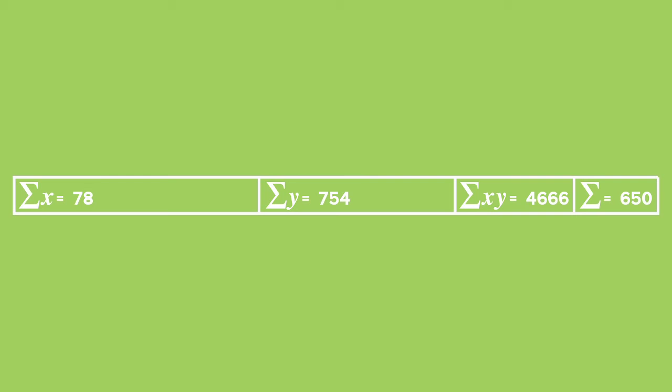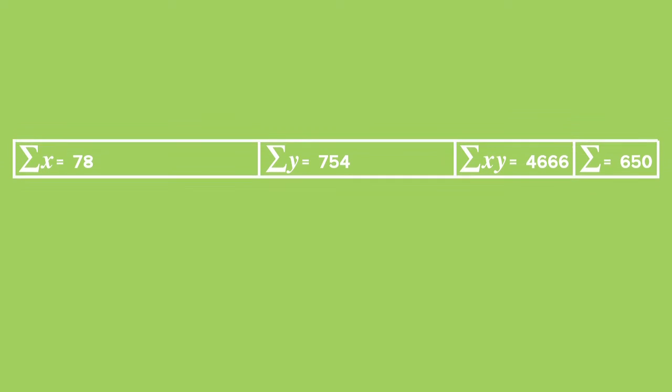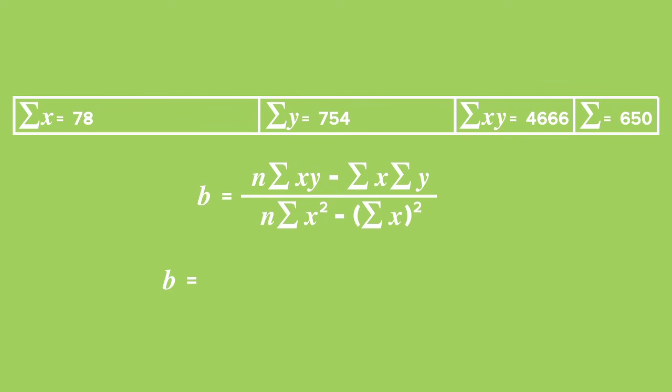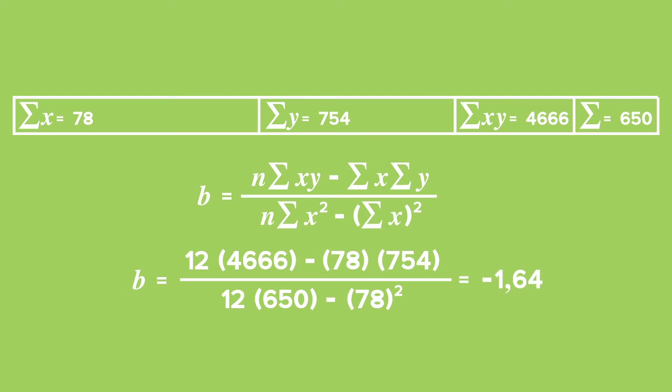We can calculate the value of b by substituting it into the formula n times the sum of product of x and y minus the sum of x times the sum of y, all divided by n times the sum of the squares of the x values minus the sum of all the x values squared. We get b is equal to 12 times 4,666 minus 78 times 754, all divided by 12 times 650 minus 78 squared. This gives us an answer of negative 1.64 for b.